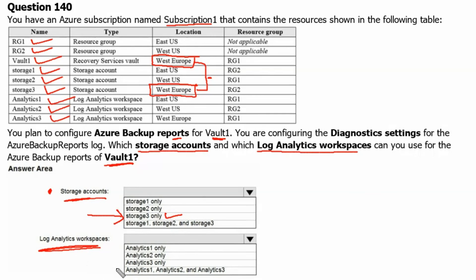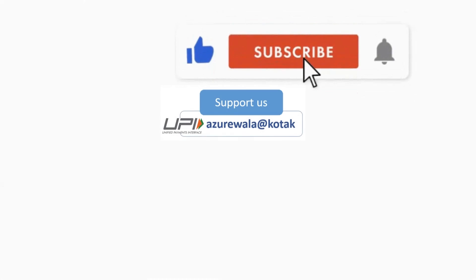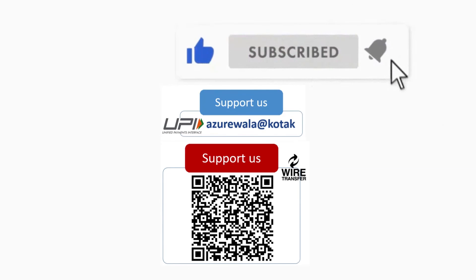Similarly, since the log analytics workspace is independent of the vault's location and subscription, any of the log analytics workspaces — analytics 1, analytics 2, or analytics 3 — can be used along with vault 1. I hope this video was informative for you. Please hit the like button.